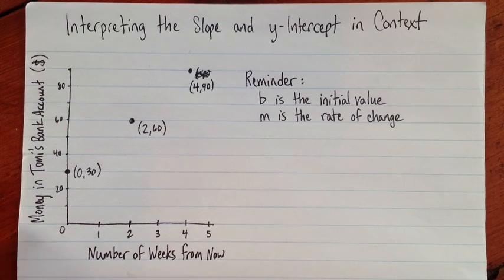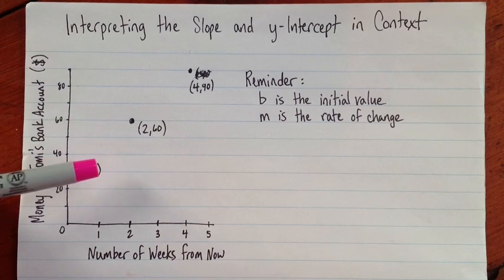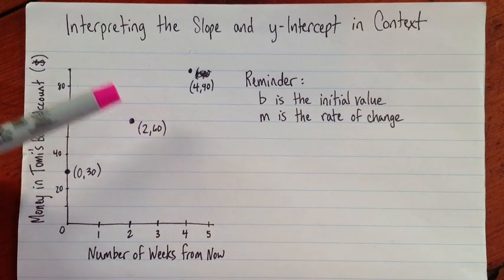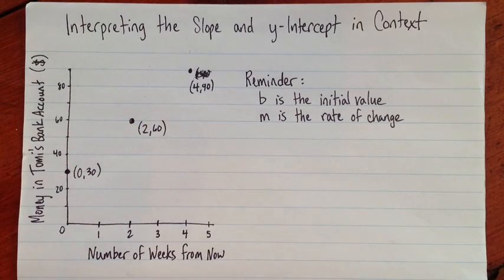So here's our story, and we've got a graph that tells us the number of weeks from now, and for a certain number of weeks, it tells us how much money is in Tommy's bank account, in dollars. So we've got three points on the graph. We know (0,30) is one of the points, (2,60) is one of the points, and (4,90) is another point.